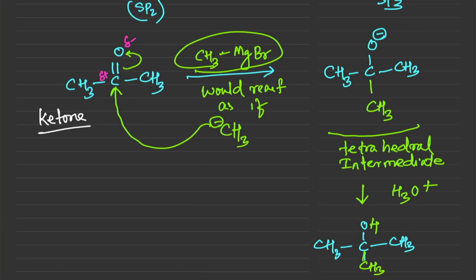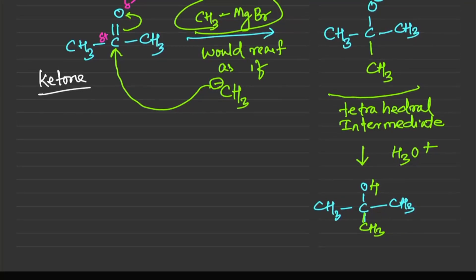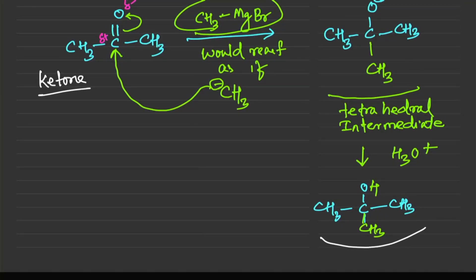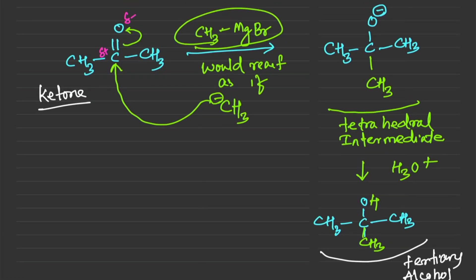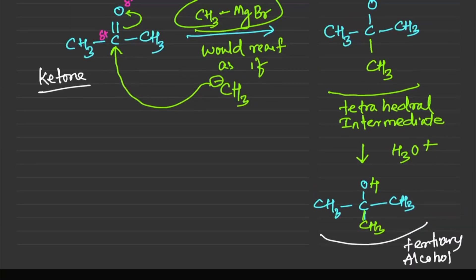We started with a ketone and ended up with a tertiary alcohol. So a ketone reacting with a Grignard reagent like CH3MgBr gives a tertiary alcohol.